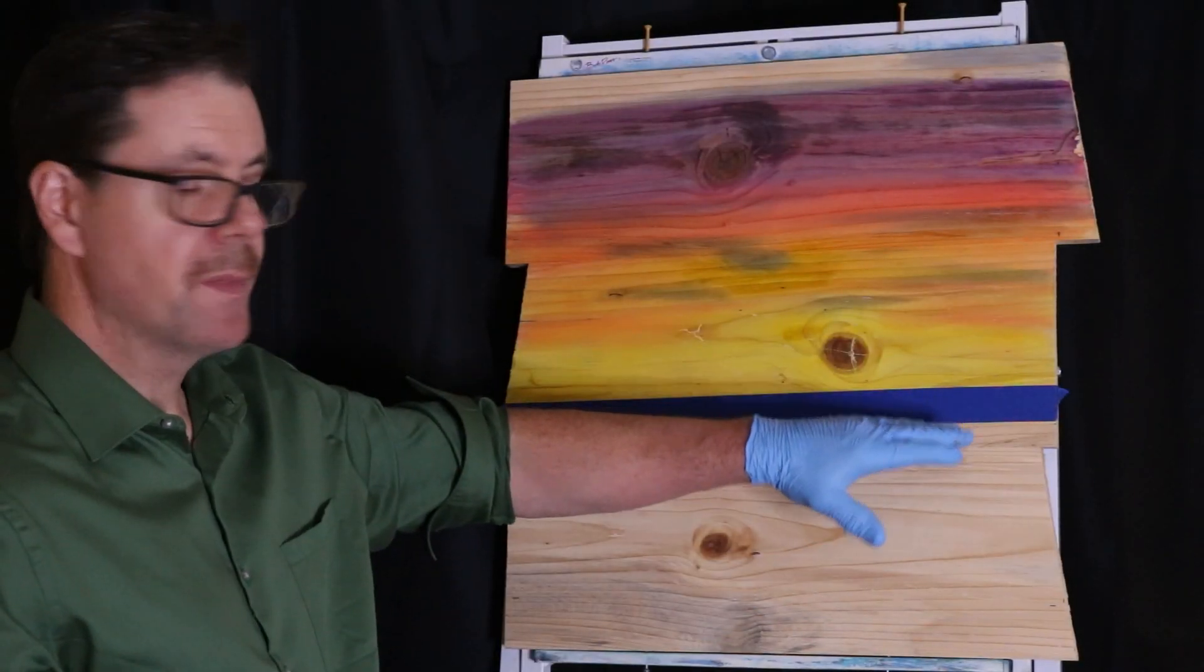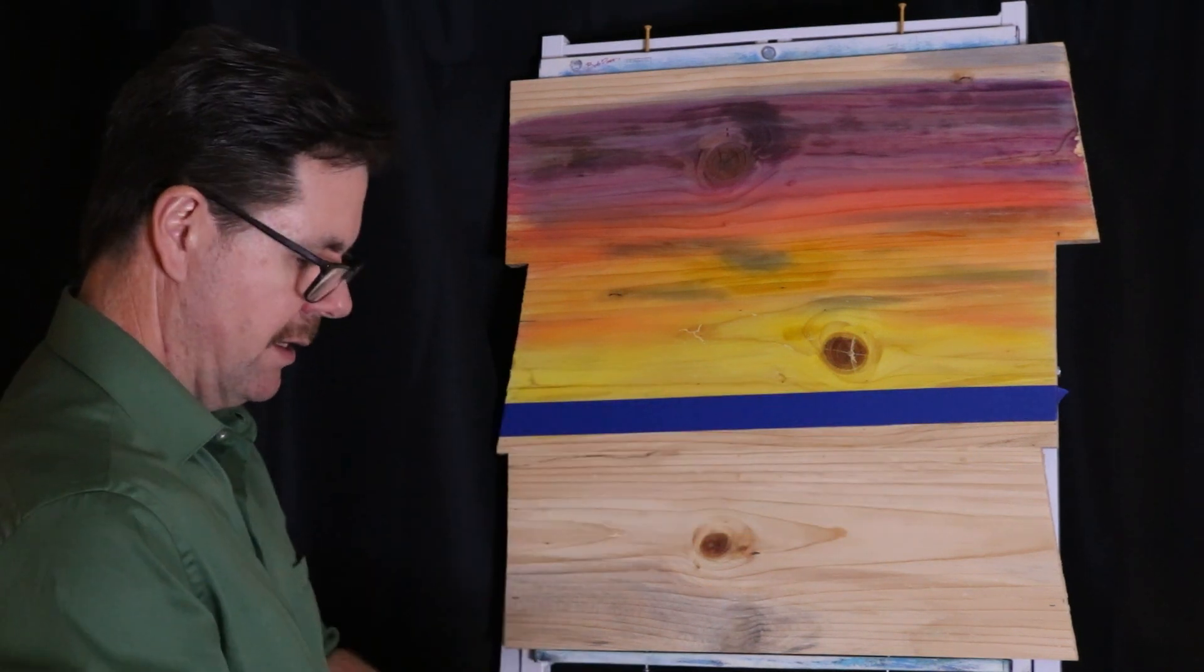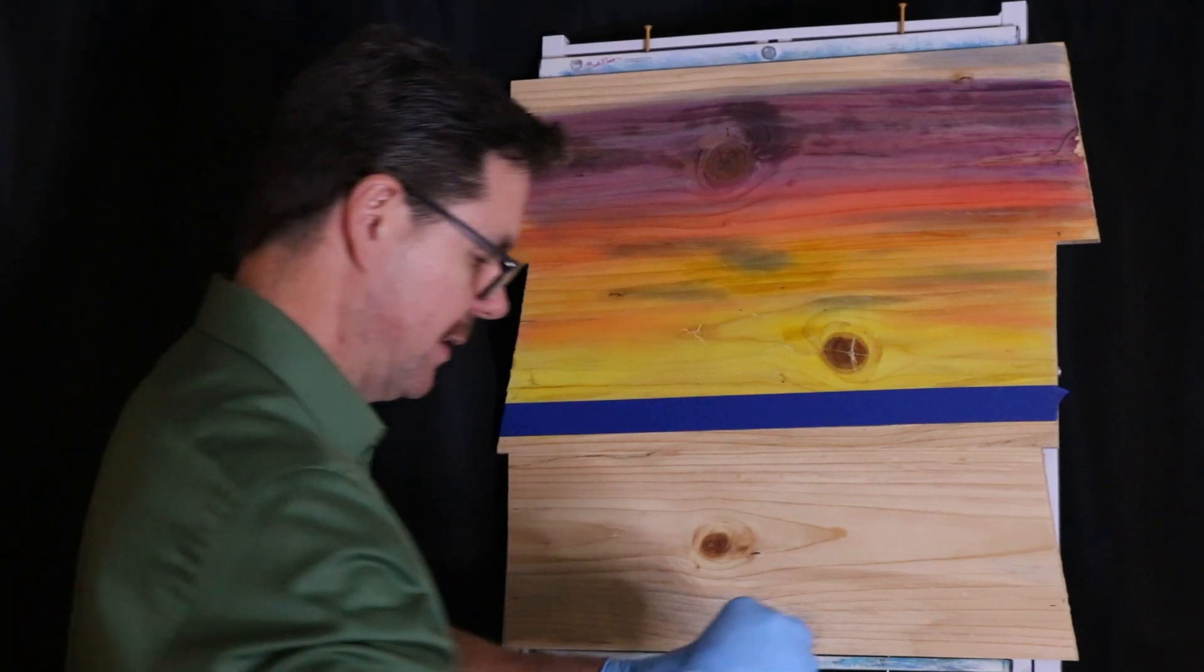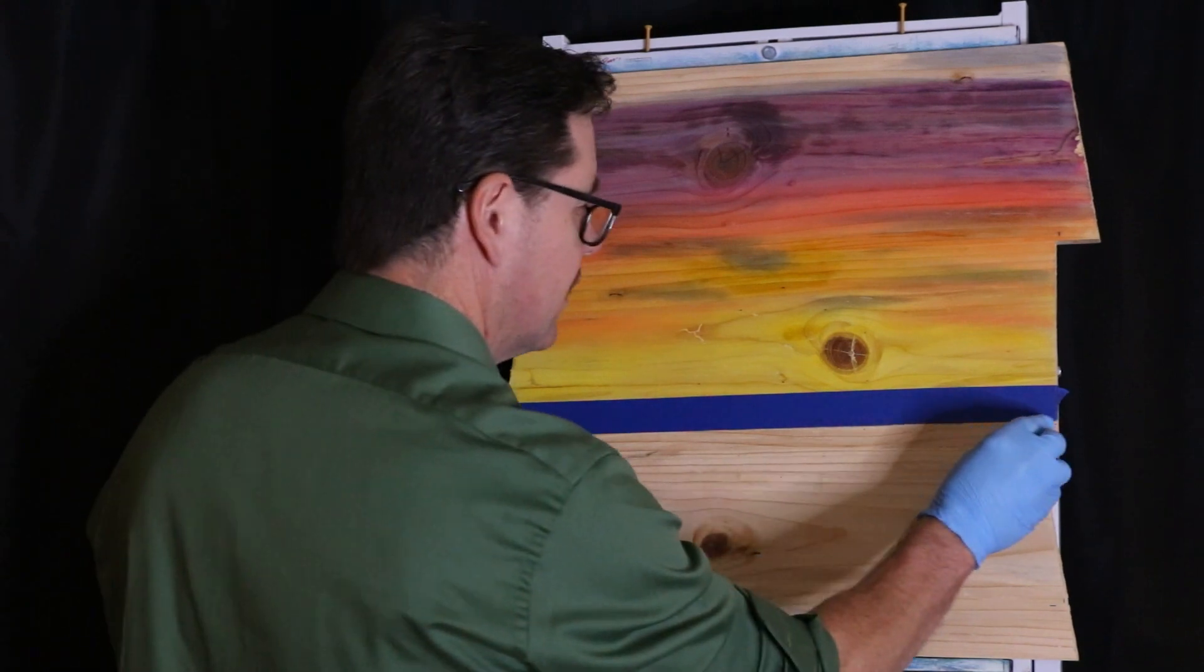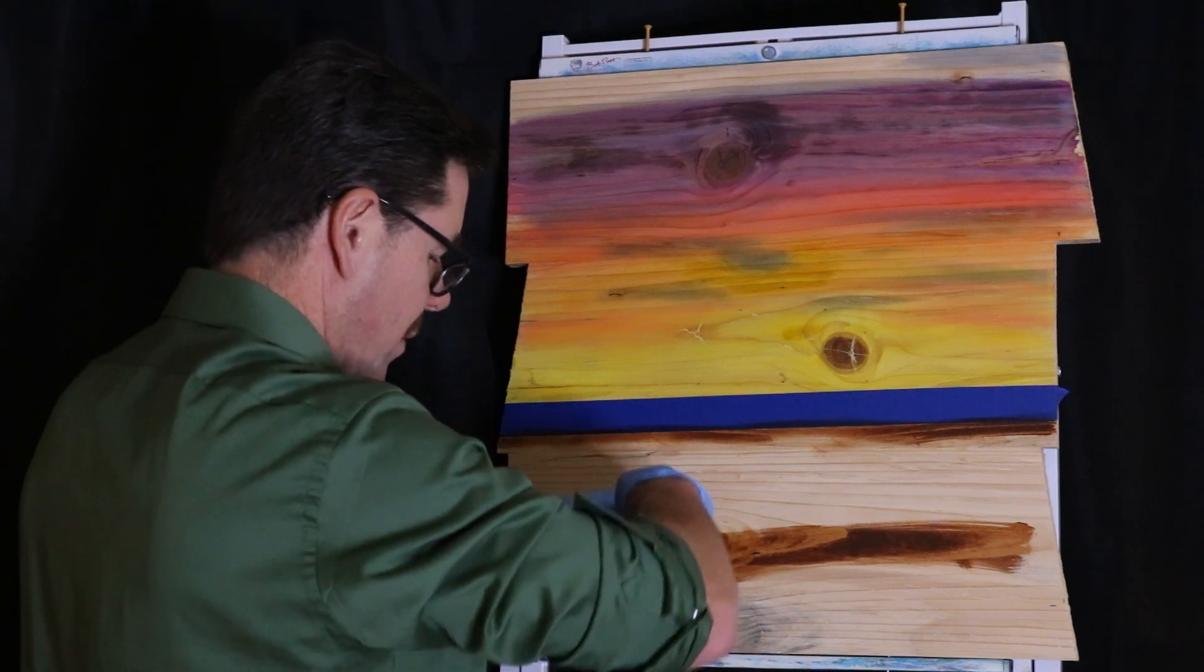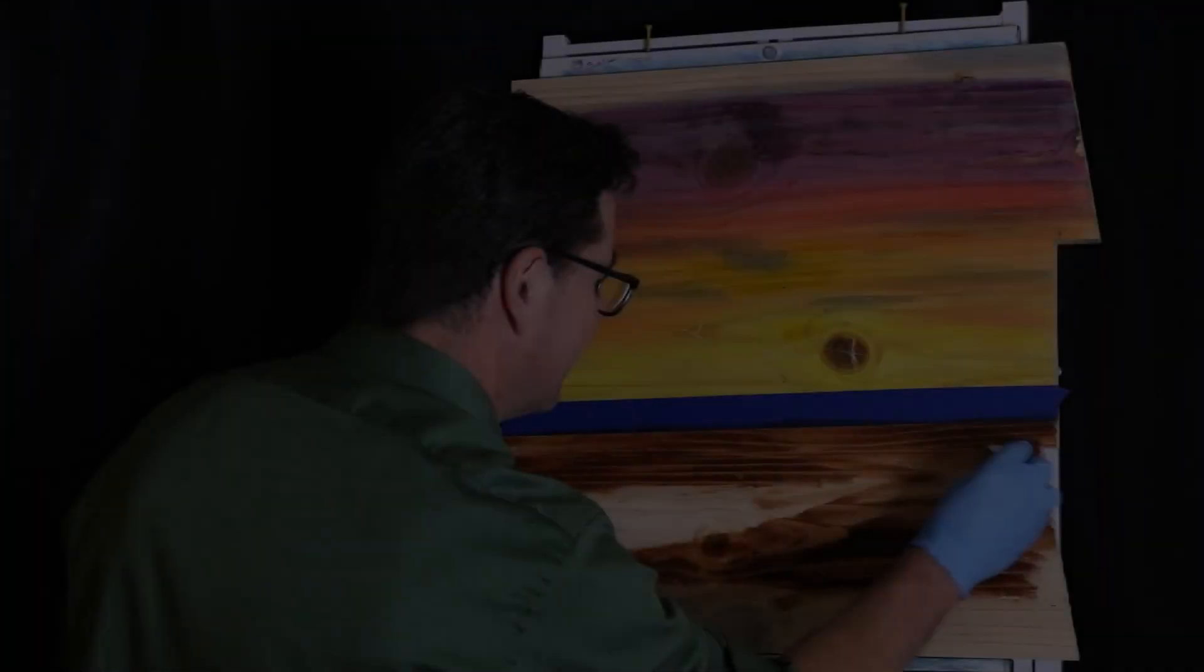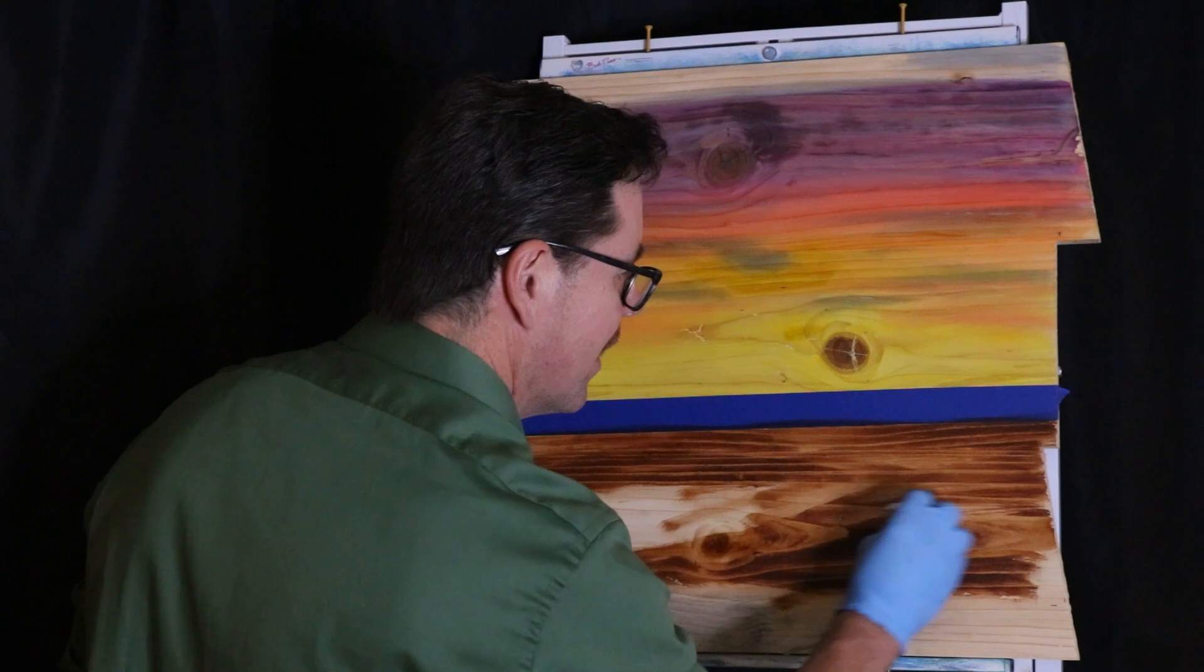Now I've repositioned my tape to protect my horizon on the bottom. And I'll go ahead and apply my wood stain to the bottom. With stain, of course, you don't have to worry. You can go ahead and saturate the wood because it's only going to take so much. Pine takes stain really well.